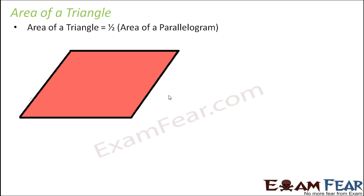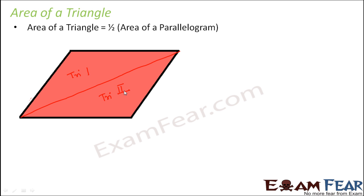The area of a triangle is half the area of a parallelogram. Why? Because whenever you look at a parallelogram, a diagonal will always divide it into two triangles. If you draw a diagonal like this, it divides the parallelogram into triangle one and triangle two.